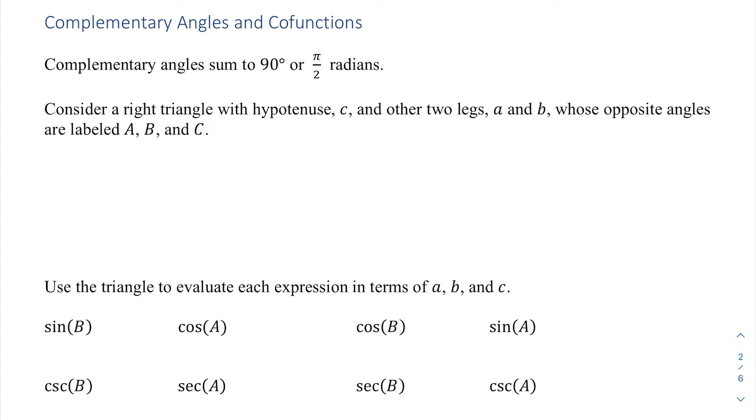Consider a right triangle with hypotenuse C and other two legs A and B, whose opposite angles are labeled A, B, and C. Let's draw that triangle. I'm going to put our right angle in the bottom right corner here and label it C. That means lowercase c will be the name of its opposite side. I'm going to put big A angle in the lower left corner. Its opposite side I'm going to call A, and then angle capital B will be in the top right corner. Its opposite side will be little b.